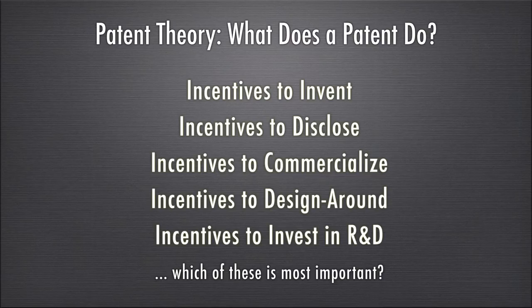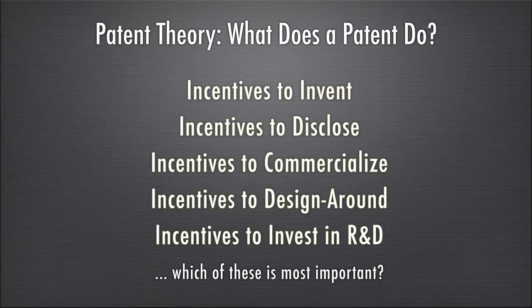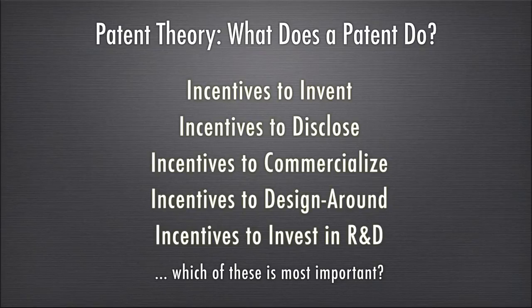Moving on to patent theory — what does a patent do? We typically think of patents in terms of incentives. Like other aspects of intellectual property, the basic story is we want more invention and therefore we create incentives for people to create more of it. The patent system can be said to have several types of incentives. One is the incentive to invent — how do you get a patent? You get it by inventing, so there's an incentive to invent built into the system.